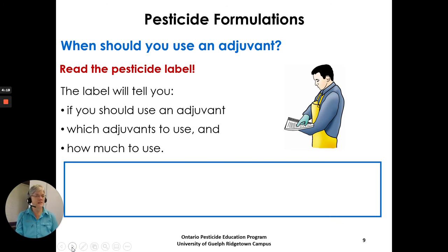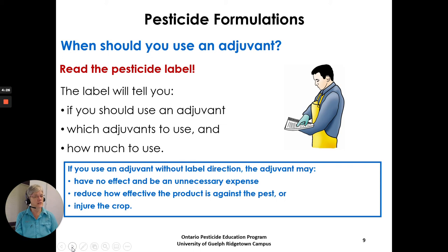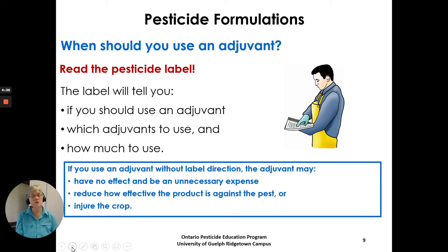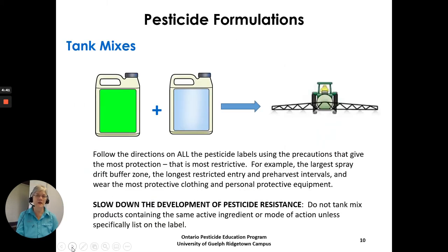When should you use an adjuvant? Read the pesticide label. The label will tell you if you should use an adjuvant, which adjuvants to use, and how much to use. If you use an adjuvant without label directions, it may have no effect and be an unnecessary expense, it may reduce how effective the product is against the pest, or it could actually injure the crop. Be careful with what you add to that product.